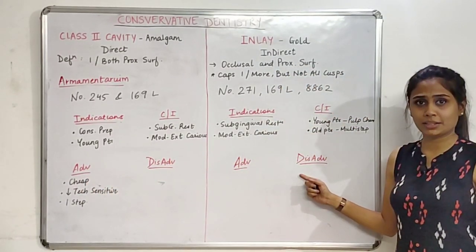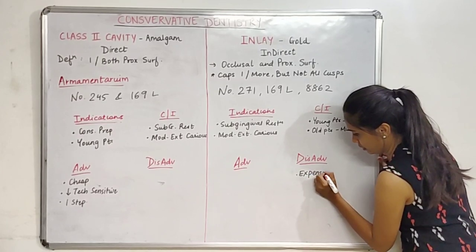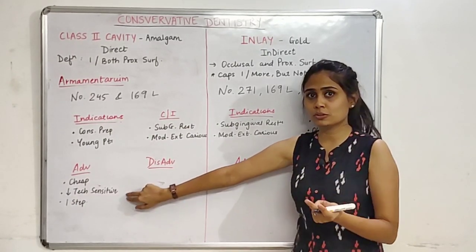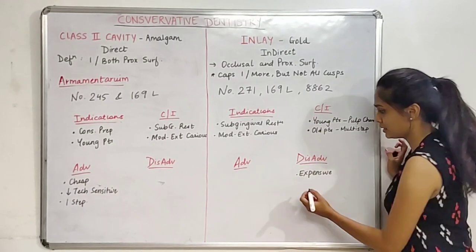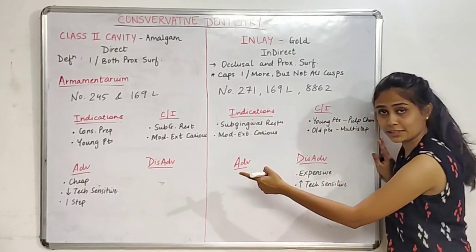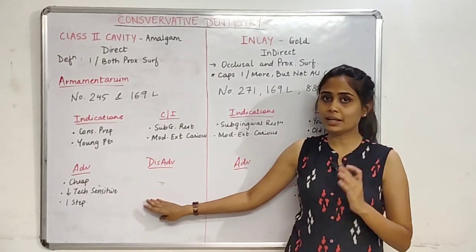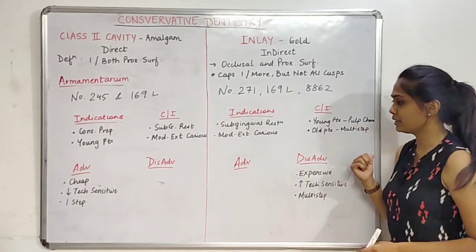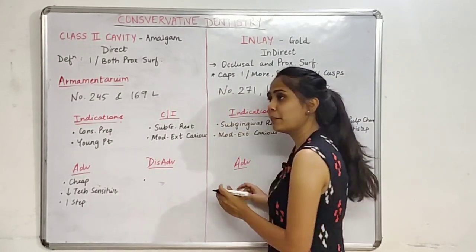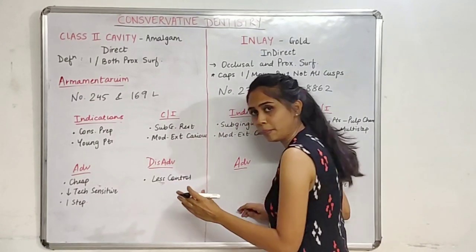The inlay cavity is expensive, more technique sensitive, and is a multi-step procedure — these are the direct inverses of the Class 2 advantages. Lastly, there is one more important point: for the amalgam restoration or Class 2 cavity, we get less control over placing proper contacts and contour.